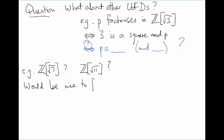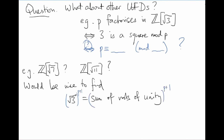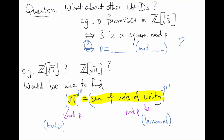For example, it would be nice to find an expression for root 3 or root 7 as some kind of sum of roots of unity, though it's not quite obvious how. But if we did achieve this, we could raise both sides of this equation to the power p plus 1, and then perform the same trick: evaluate it mod p in two different ways, one using Euler's criterion and the other using the binomial theorem. In this video, we'll focus on finding suitable expressions like this.